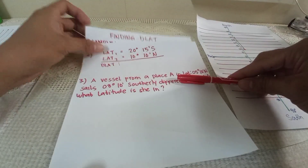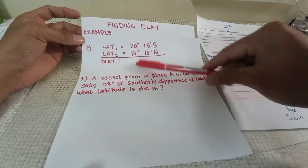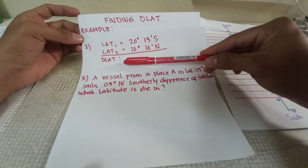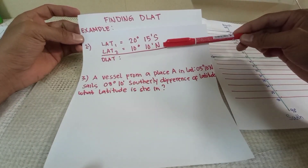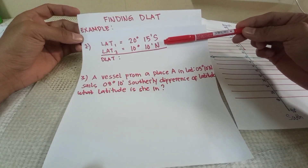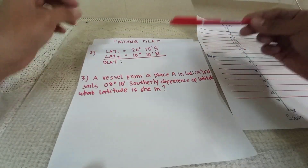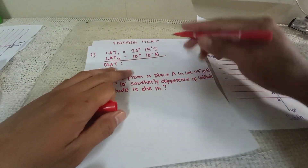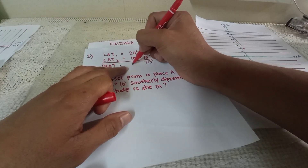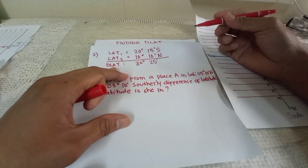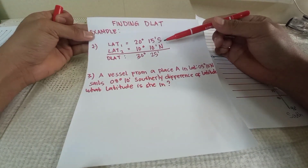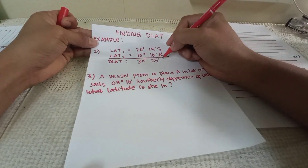Example number 2 for finding the difference of latitude: latitude 1 is 20 degrees 15 minutes South; latitude 2 is 10 degrees 10 minutes North. Since we have different names, we are going to add. 15 plus 10 is 25 minutes. 20 plus 10 is 30 degrees. The name of our difference of latitude is North.